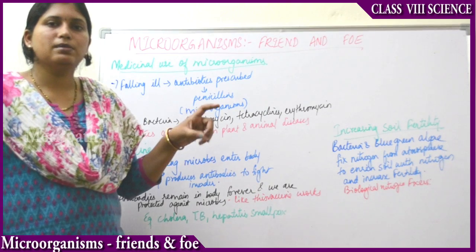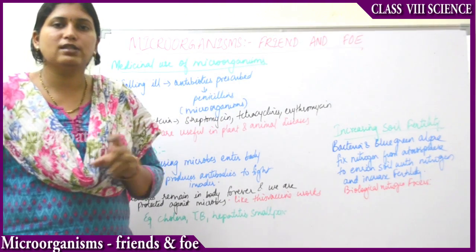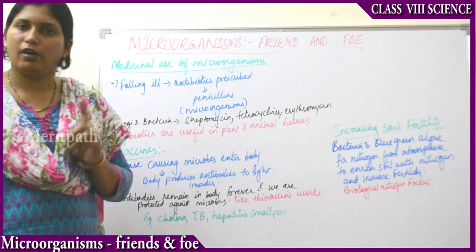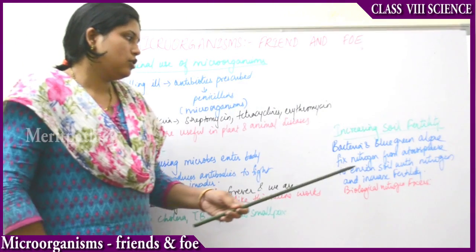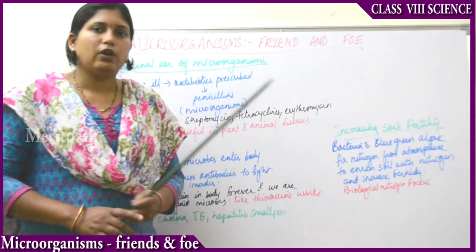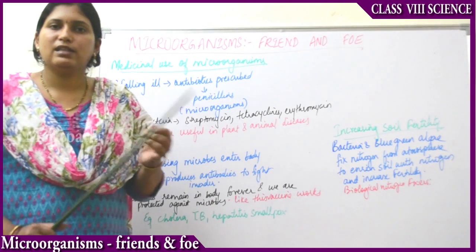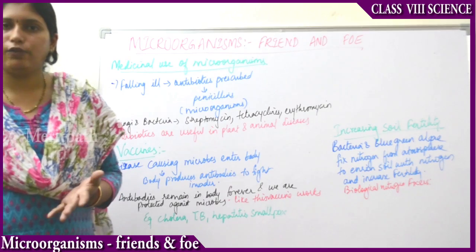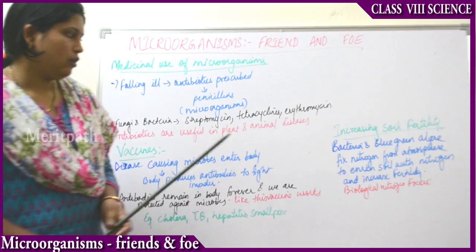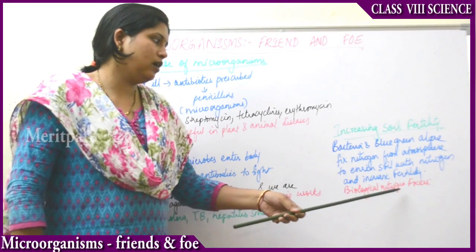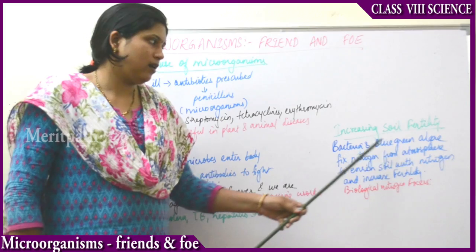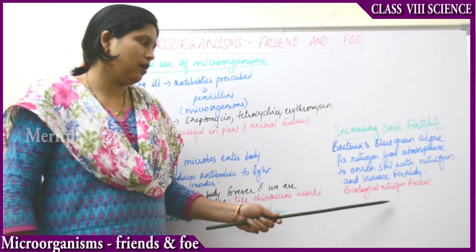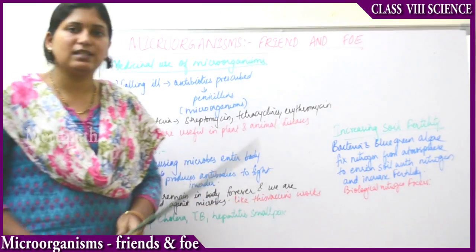Thereby, the soil becomes nitrogen-rich. Nitrogen is the most important, highest-required nutrient for the soil. By fixing atmospheric nitrogen to the soil, bacteria and blue-green algae increase soil fertility. They are therefore known as the biological nitrogen fixers.